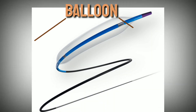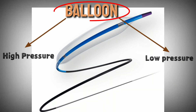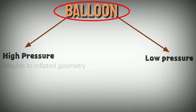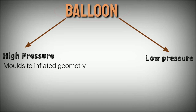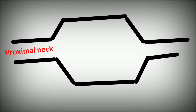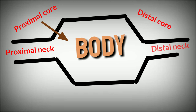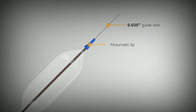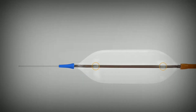Balloons are of two types: high pressure and low pressure balloons. High pressure ones are molded to their inflated geometry, while low pressure ones are molded in a tubular shape which is then expanded to several times its original size, and used primarily for fixation and occlusion. The structure of a balloon includes a proximal neck and core, body, and a distal neck and distal core, and is made up of PET, nylon, polyurethanes, or PVC.